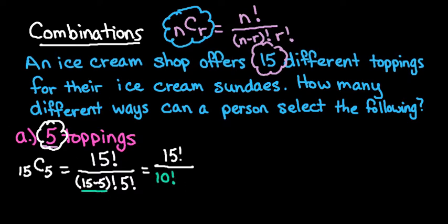That bottom part we can simplify. 15 minus 5 ends up giving us 10 factorial times 5 factorial. You'll notice that these two numbers down here always will add up to be the top number, so 10 plus 5 gives me 15. Now what we want to do is simplify this. I'm going to stop when I get to the larger one at the bottom.